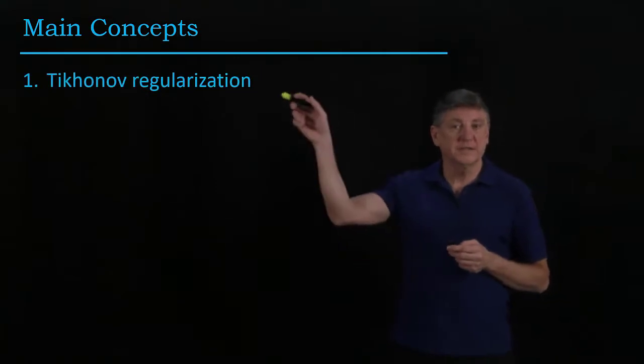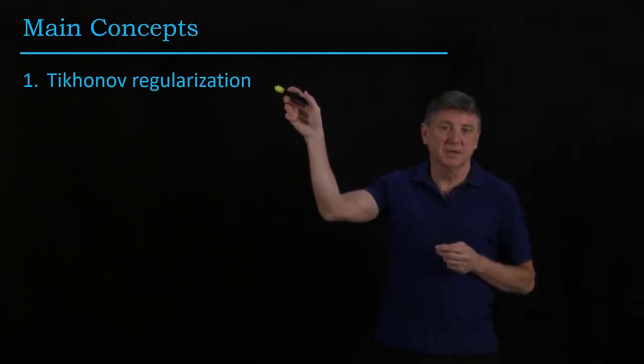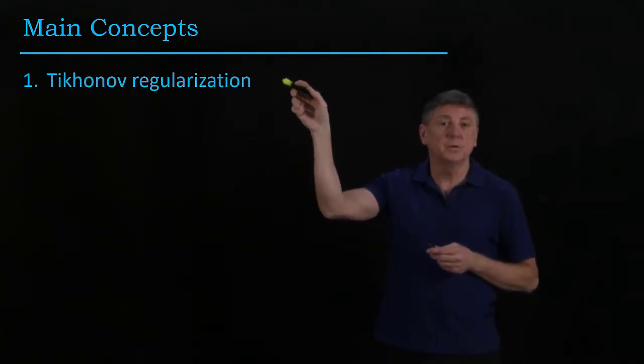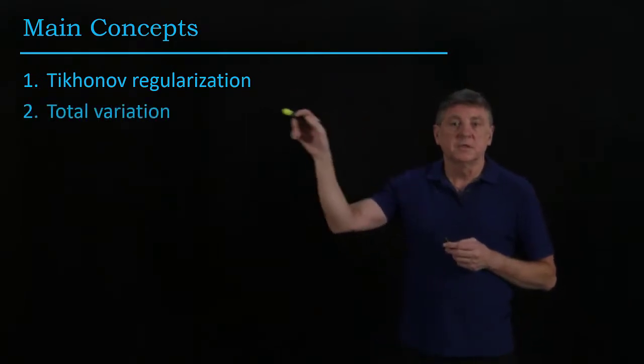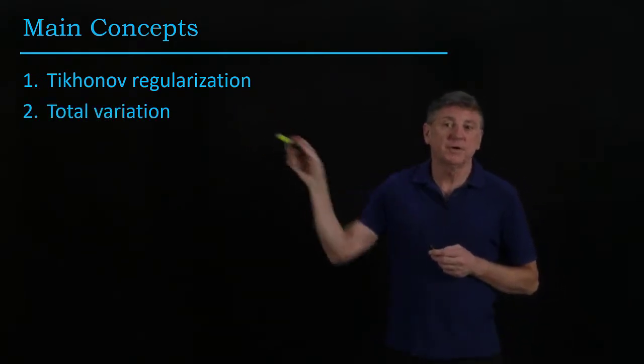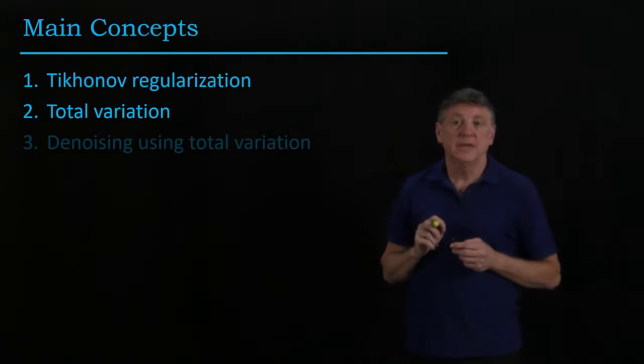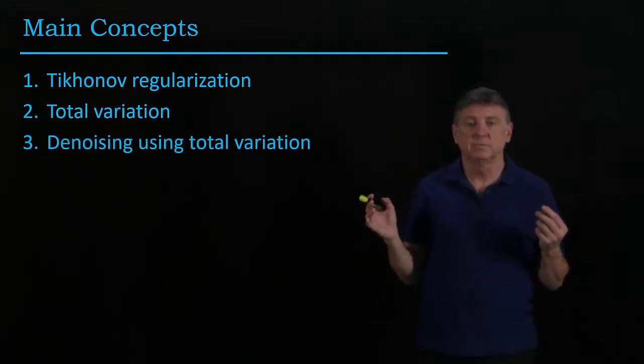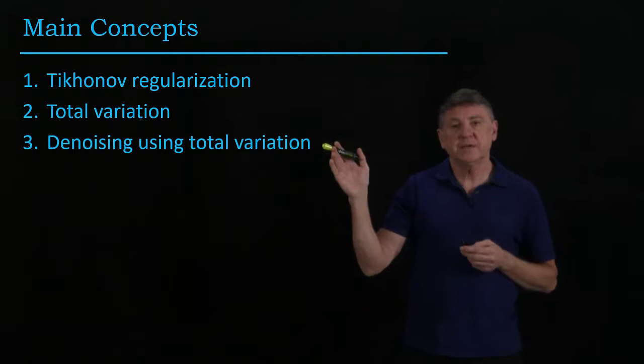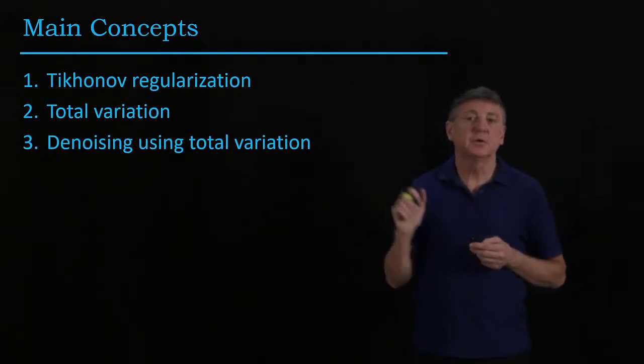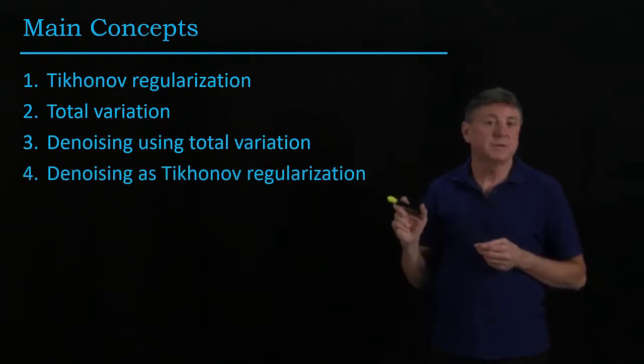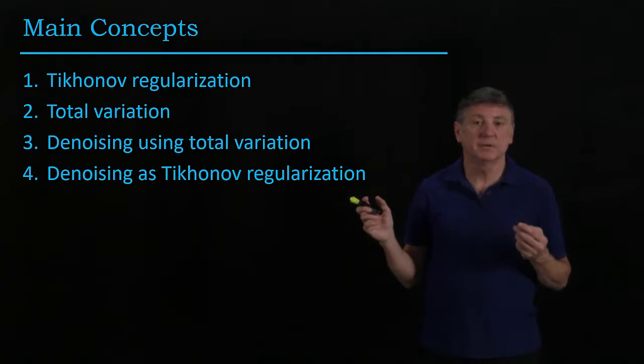The main concepts are what is Tikhonov regularization. We won't go through proofs, but we will go through the results. Similarly, we'll explore very briefly total variation. Each one of these incidentally could be a course in itself. We'll take one application of total variation that is called denoising and we'll represent this as a problem in Tikhonov regularization.